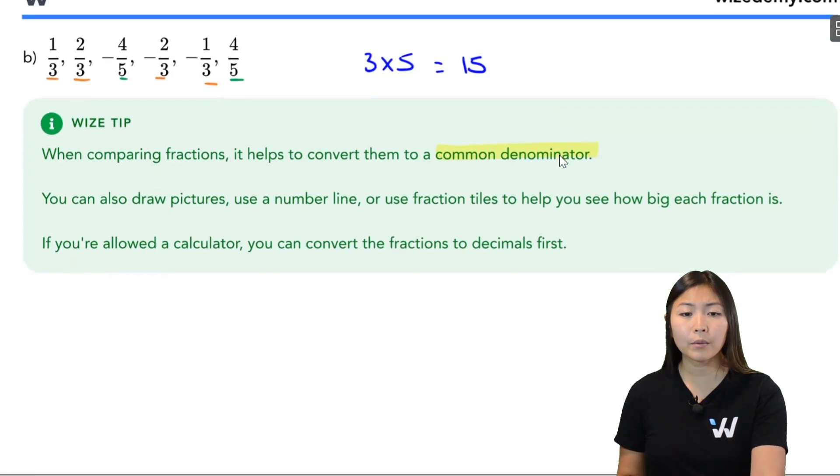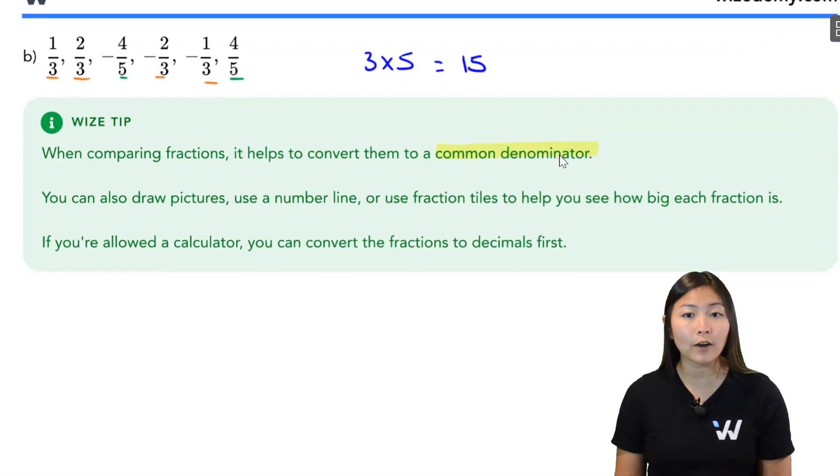So now what we're going to do is convert all of these fractions into a denominator of 15. So taking my first fraction, one third, I need to make the bottom into a 15, meaning I need to multiply by five. Now, the golden rule when it comes to converting into common denominators is whatever you do to the bottom, you have to do to the top. So I need to multiply the top by five as well. So I end up with five over 15.